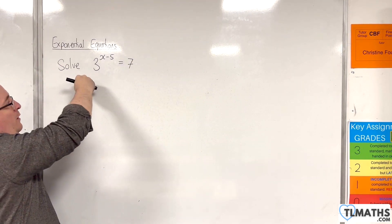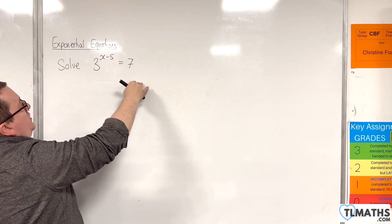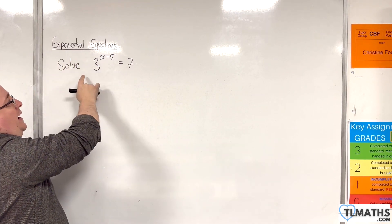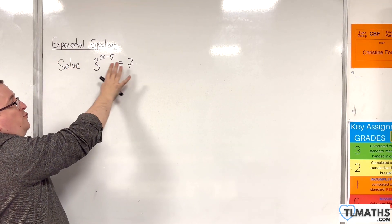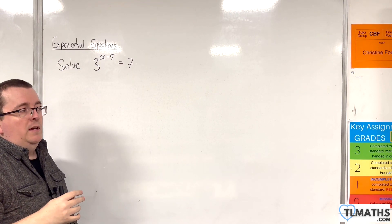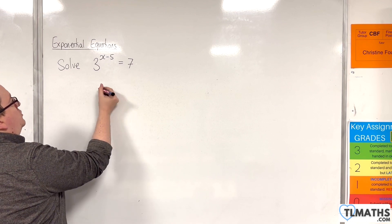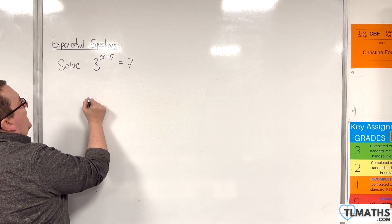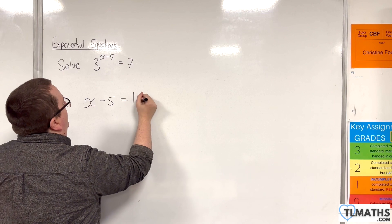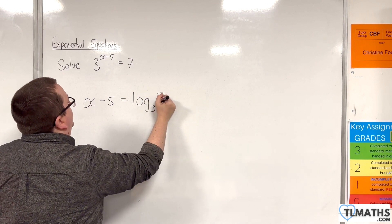In the middle is a line of working that will essentially say take the logarithm of base 3 of both sides, but we don't need to write that down. We can just go straight to saying that x minus 5 is equal to log base 3 of 7. So we can go from that line directly to that one.